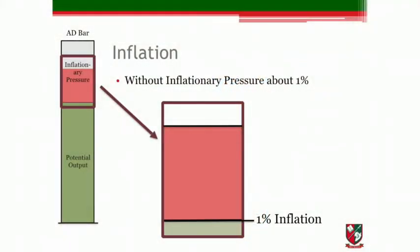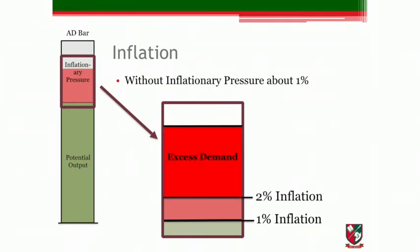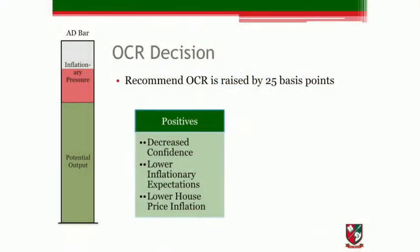I'll hand you back to David. We forecast that without inflationary pressure, inflation will be at about 1% due to rising house, oil and electricity prices. If we zoom in on the AD bar, I can plot 1% inflation there — we estimate 2% inflation to be about there. All the AD above the 2% target point is excess demand. To reduce AD, we recommended the OCR was raised by 25 basis points to 3.25%. This will decrease confidence, lower inflationary expectations and lower house price inflation, contributing to a reduction in consumption and investment, lowering AD so it is closer to our 2% target point.